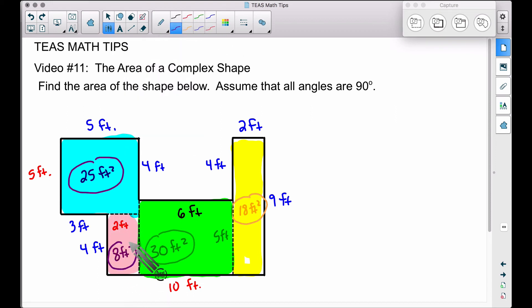And finally, taking all four of these sections, let's add them all up. 30 plus 18, that's 48. 48 square feet plus 8 square feet, that's going to be 56 square feet. And 56 square feet plus 25 square feet, that's going to be 81. So the total area of this complex shape is 81 square feet.